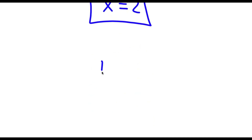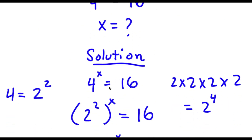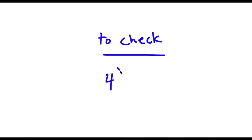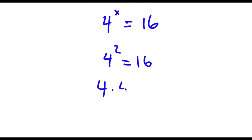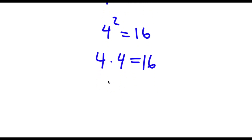To check: I had 4 to the power of x is equal to 16. With x equals 2, I have 4 to the power of 2 is equal to 16. 4 to the power of 2 is the same thing as 4 times 4, and 4 times 4 is 16. So I have 16 is equal to 16. ✓